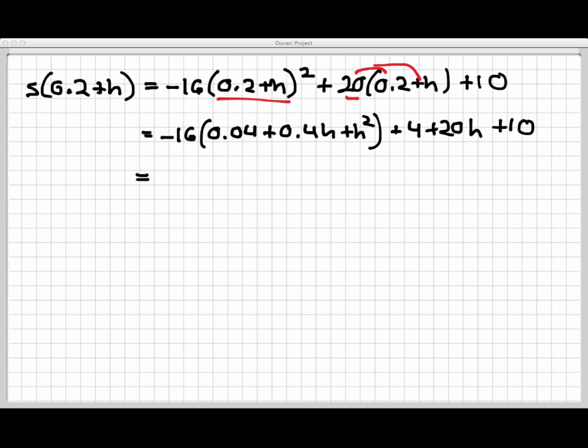Now I think the next algebra step would be to distribute the 16 throughout the group that's attached to it, so that's going to give me negative 0.64, minus 6.4h minus 16h squared. There was also remaining a 4, a 20h, and a 10.